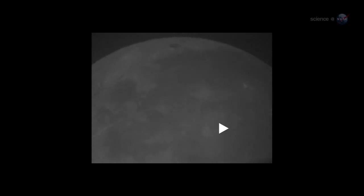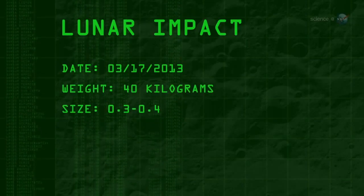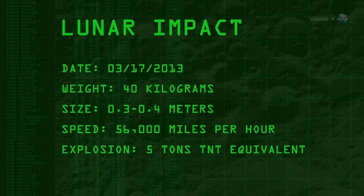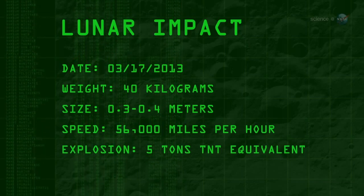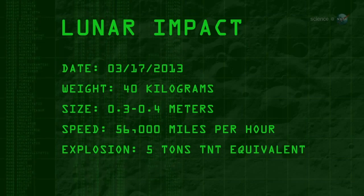The 40-kilogram meteoroid, measuring 0.3 to 0.4 meters wide, hit the Moon traveling 56,000 miles per hour. The resulting explosion packed as much punch as five tons of TNT.